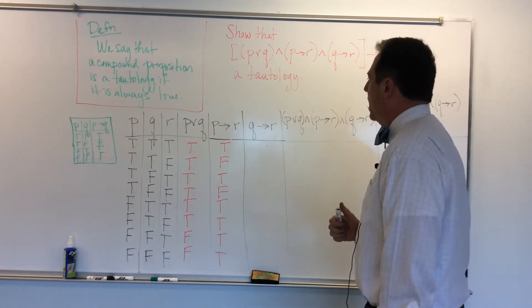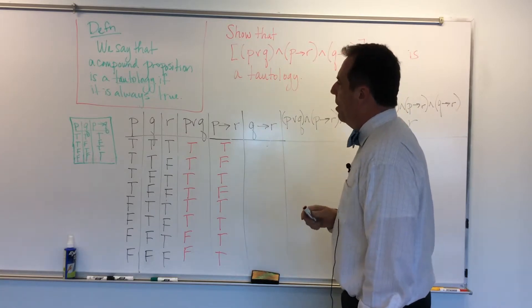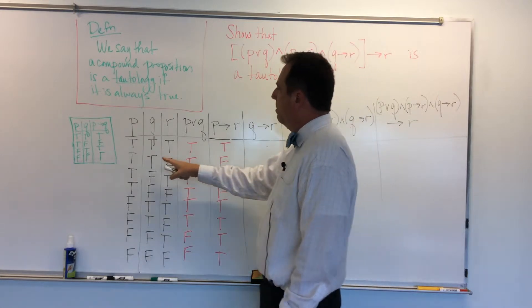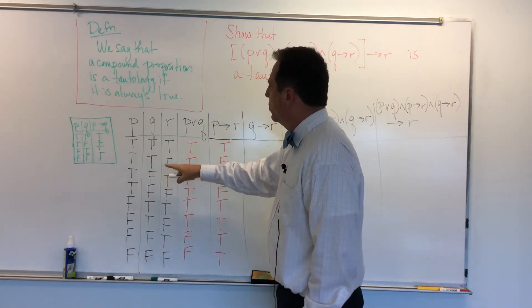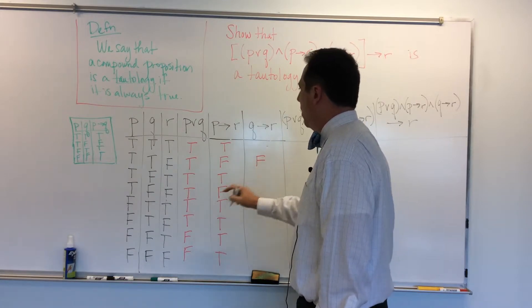And so many columns. So now we're going to do the same thing, but this time with Q implies R. So good thing that Q and R are right next to each other. Again, all I'm going to do is try to find the places where Q is true and R is false. Well, here's one.